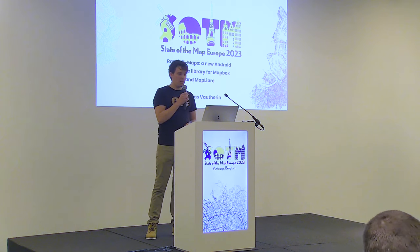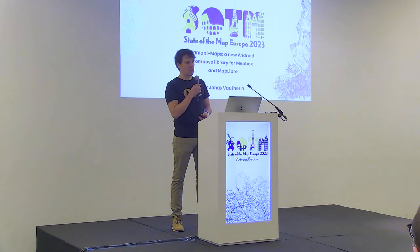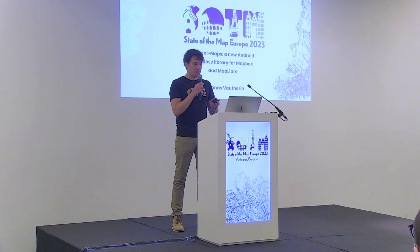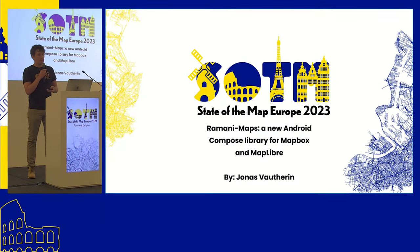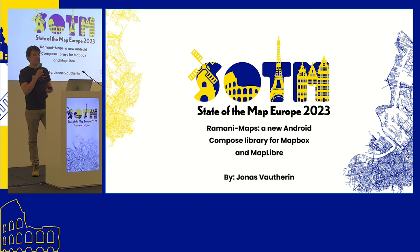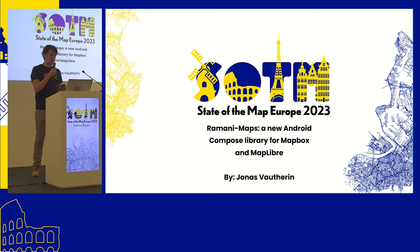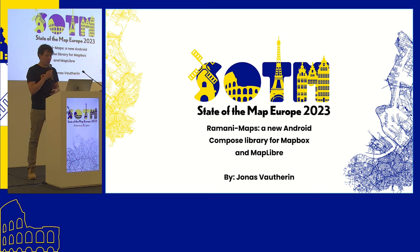Hello. I will be presenting a small project that a friend and I have been working on recently. It's an Android library that can be used to develop apps with the new Android Compose framework. Because it's an Android app, I will be showing some code, but I'm not expecting you to have advanced or expert knowledge of Android. My point here is just to show what kind of problem Ramani Maps is solving, and hopefully it could be useful for you at some point if you want to write a new app using Android.